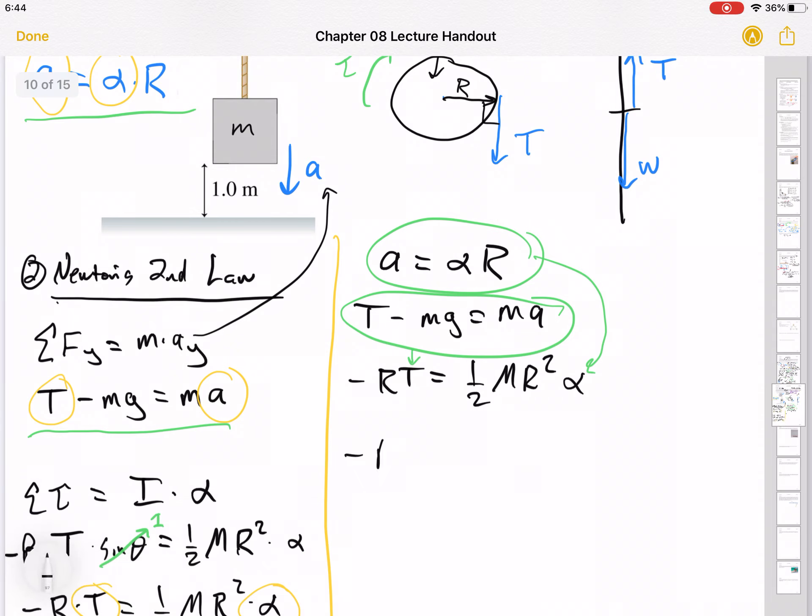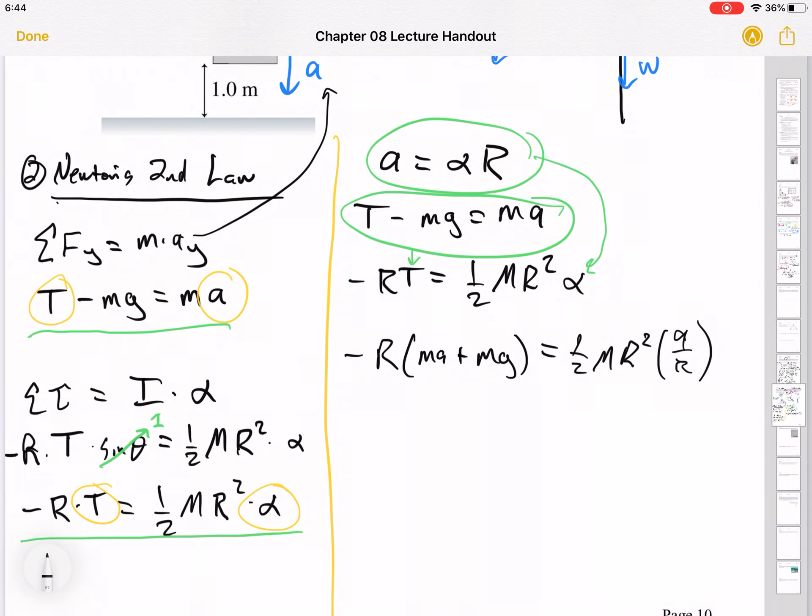So if we do that, minus R, let's see, tension must be ma plus mg. So I'll say ma plus mg equals half M R squared and alpha is a over R. Okay. So we can simplify this once. I'll divide by R and divide by R and I've got another R here. I feel like that's too many R's going away. Okay. Oh no, we're fine. Okay. So yeah, again, this R squared can go away with that R and that R. Do you see that divide by the R? Okay.